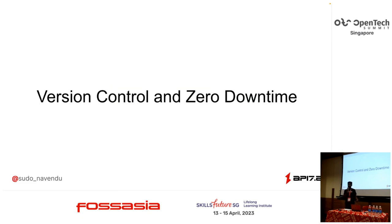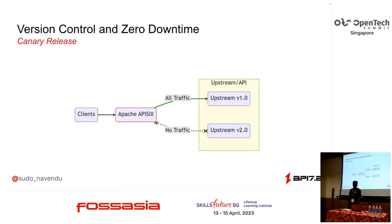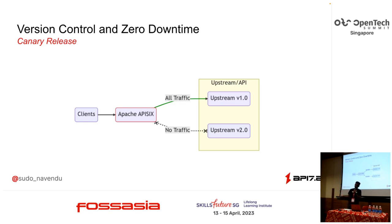Another aspect of reliability is version control and zero downtime. You have to make sure you are able to release new versions of your application without your users experiencing any downtime. You can do this with something called a canary release — a release strategy followed in the software engineering world. You have your v1.0 API and you are trying to switch to a v2.0 API, with all traffic initially being routed to v1.0 by the API Gateway, and v2.0 deployed on your server.